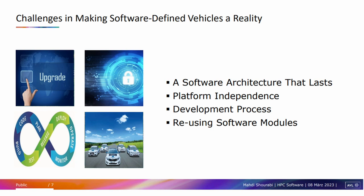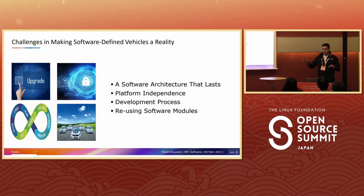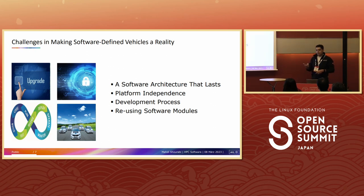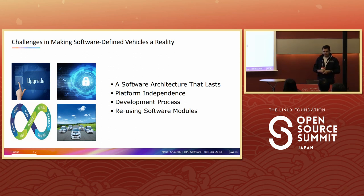One challenge is that SDV needs a software architecture that lasts a long time. Since development should continue after start of production, this software architecture must be able to receive new updates. Also, because the software is so complex, there will need to be some form of platform independence so the software can be easily migrated to another hardware platform. Additionally, this complexity is not just about software — when software gets bigger, the development cycle must also be reviewed, and this is also a big challenge.